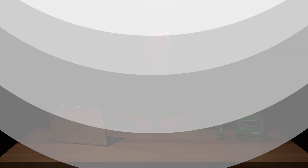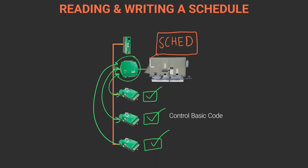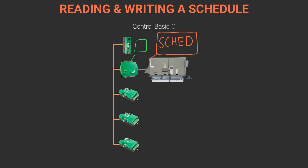Let's look at a schedule example. An air handler controller has the schedule and needs to notify downstream VAV controllers that are dependent on its air supply. We can move that data in two different ways. Using reads, you may choose to add ControlBasic code to the air handler unit that will push the data to the VAV controllers.